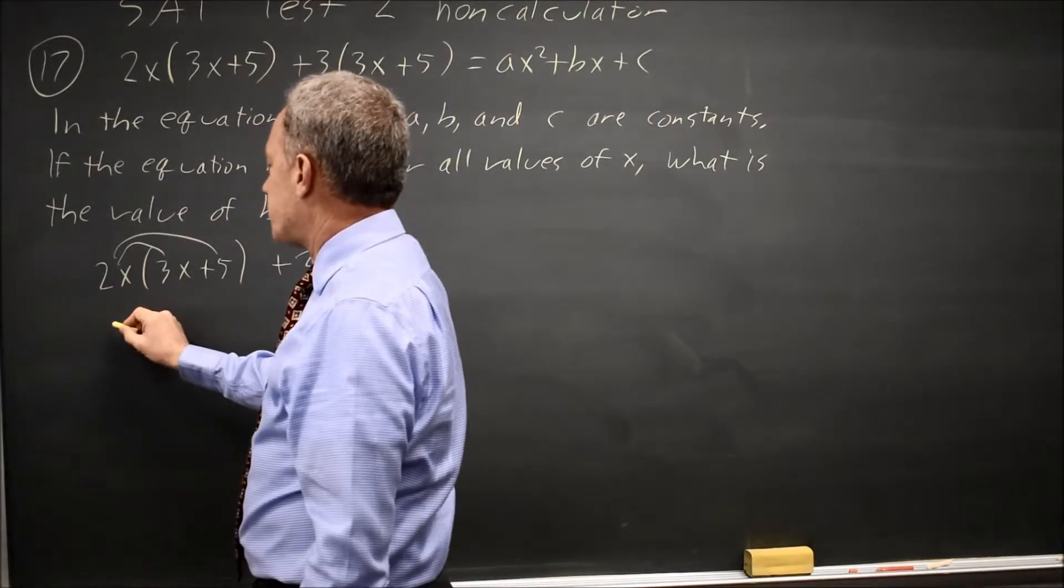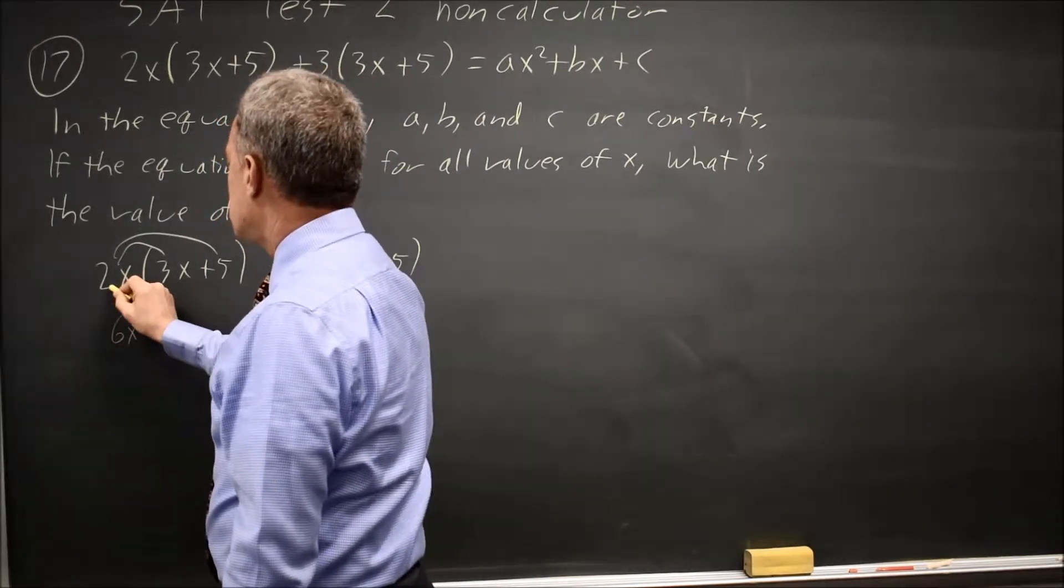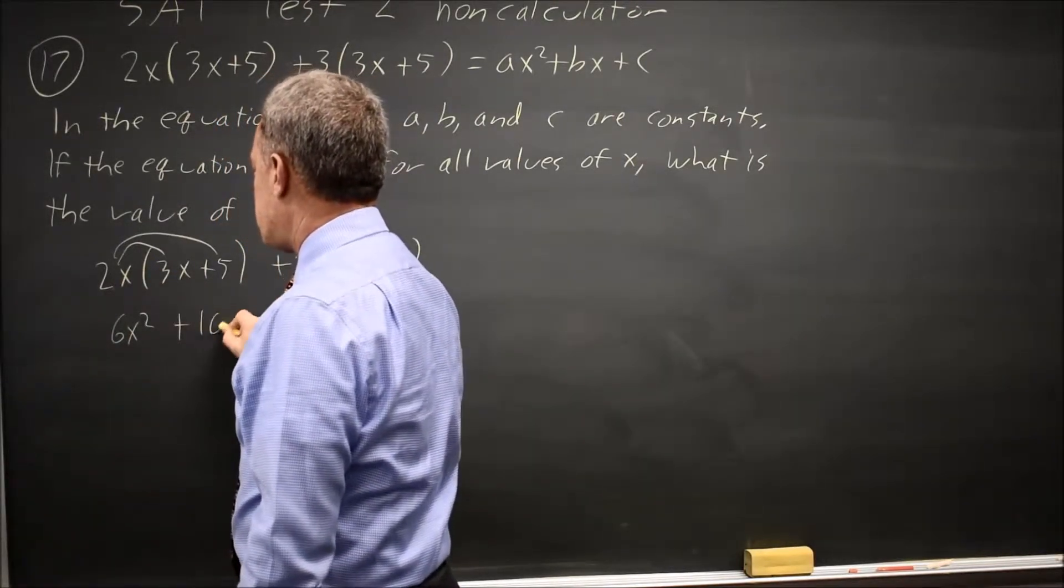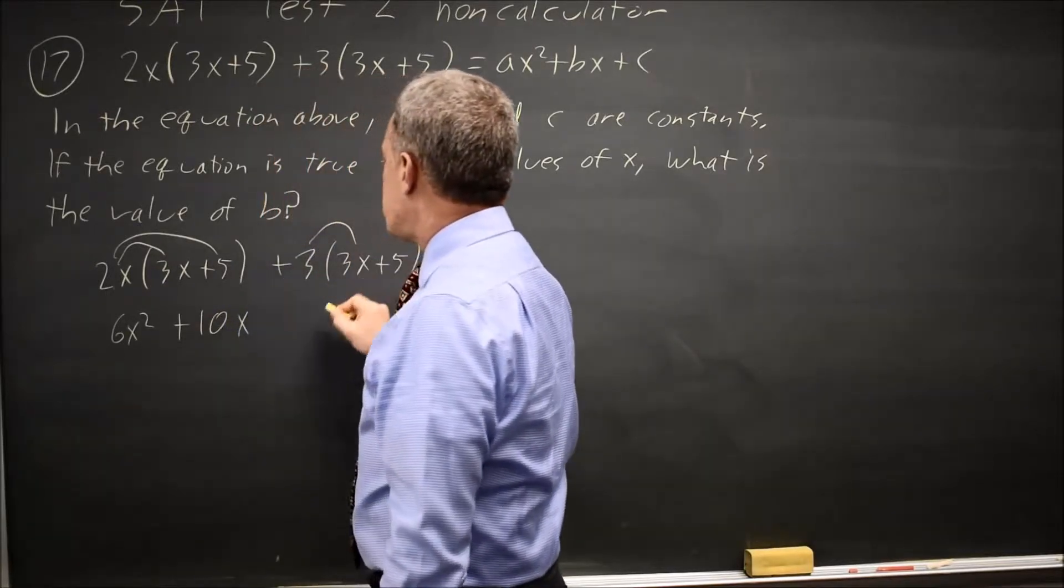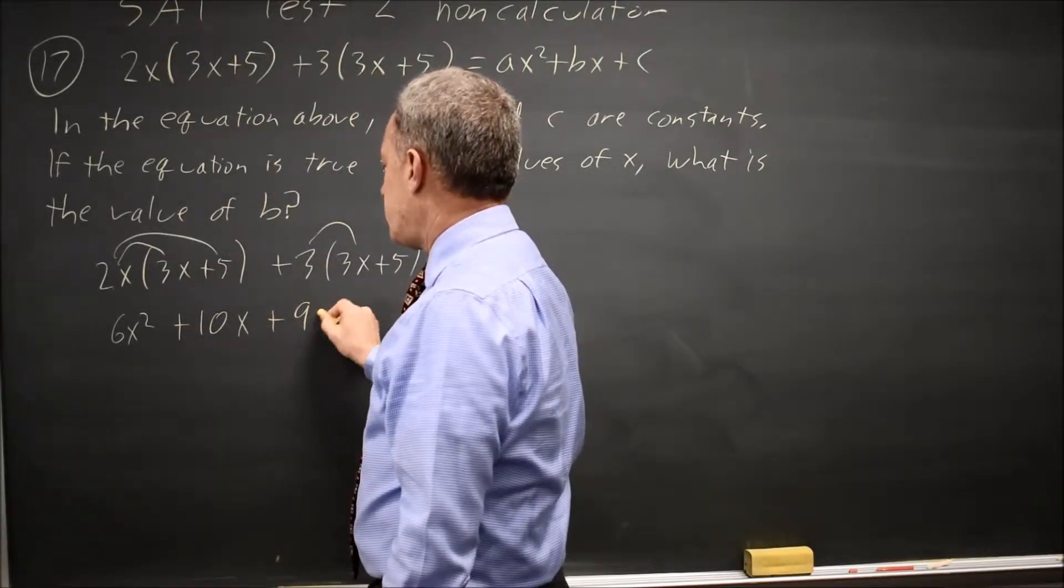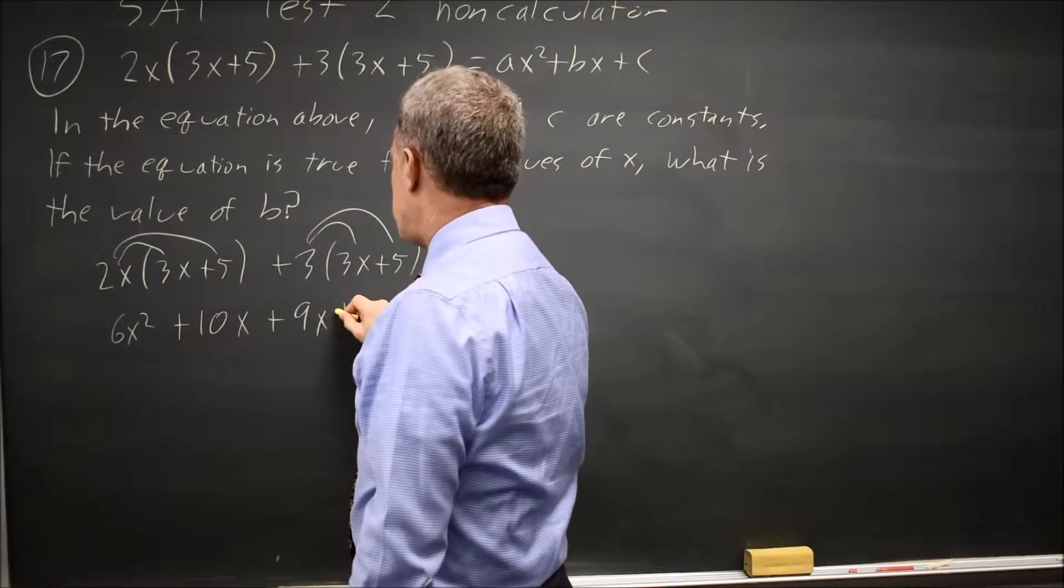So 2x times 3x is 6x squared, 2x times 5 is plus 10x, 3 times 3x is 9x, 3 times 5 is 15.